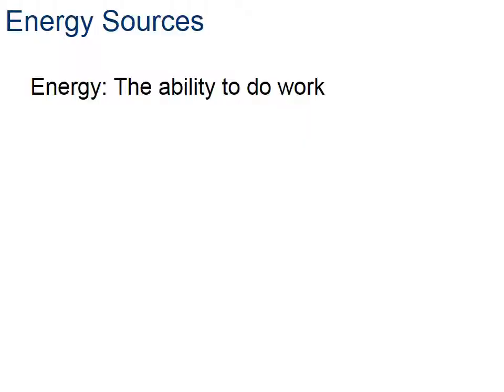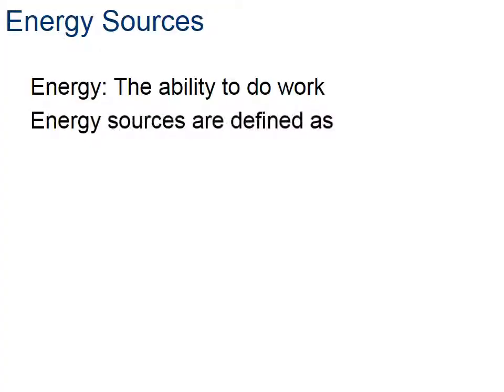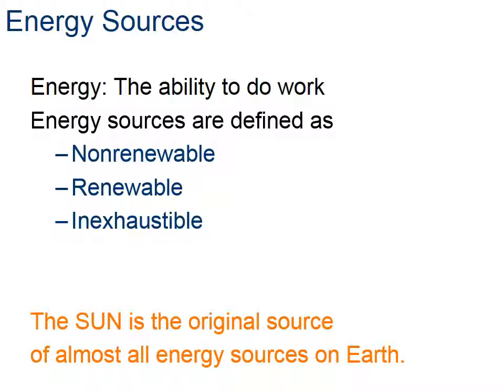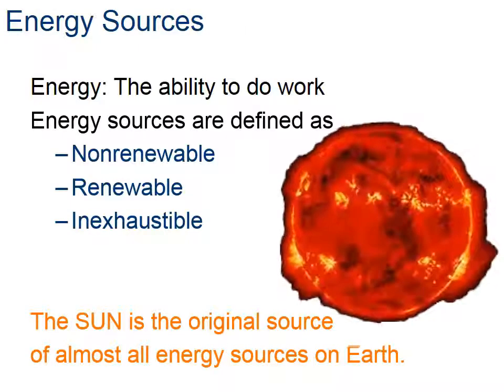So we've figured out that plants and animals are basically solar-powered living things. But let's take a step back and talk about energy in the big picture. What exactly is energy? Energy is the ability to do work - and work has a very specific definition which we'll get to a little bit later. There are three different sources of energy we can classify: renewable, non-renewable, and inexhaustible. And pretty much all of those sources come from the sun in some form or another.